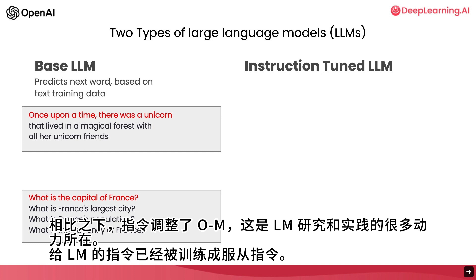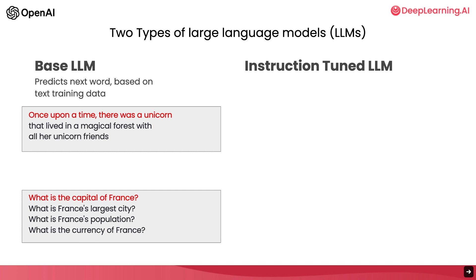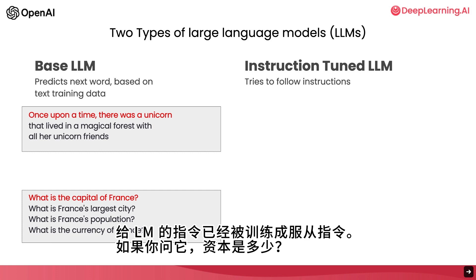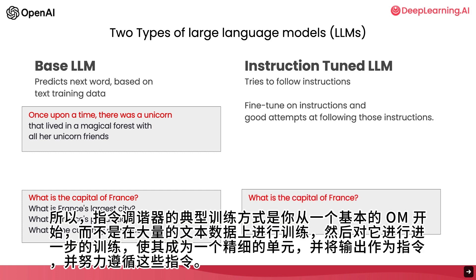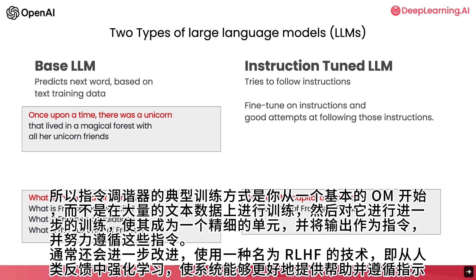In contrast, an instruction-tuned LLM — which is where a lot of the momentum of LLM research and practice has been going — has been trained to follow instructions. So if you were to ask it 'what is the capital of France,' it is much more likely to output something like 'the capital of France is Paris.' The way instruction-tuned LLMs are typically trained is: you start with a base LLM trained on a huge amount of text data, and further fine-tune it with inputs and outputs that are instructions and good attempts to follow those instructions.